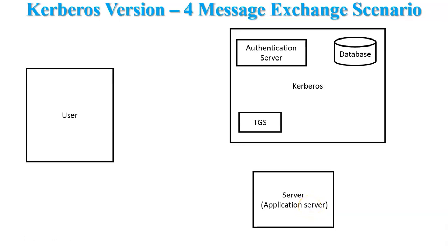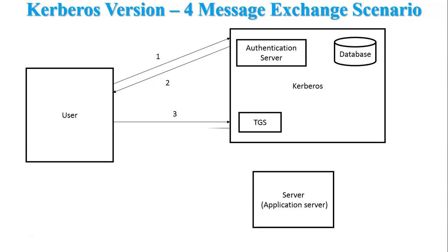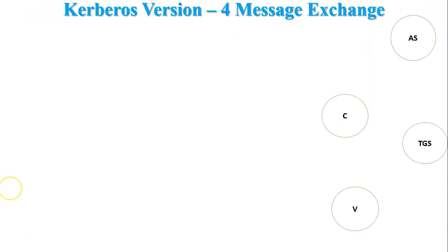The user wants to communicate with the server and access services, but the server cannot provide services directly. So the user must first authenticate with the authentication server, then access the services. The user goes to the authentication server, which provides a ticket for the ticket granting server. The ticket granting server then provides a ticket for the application server, and the application server provides the services.